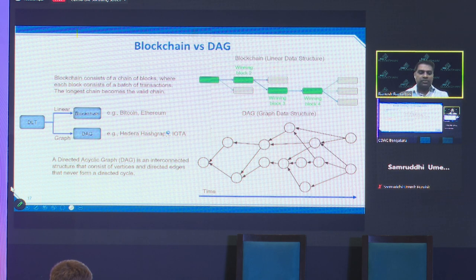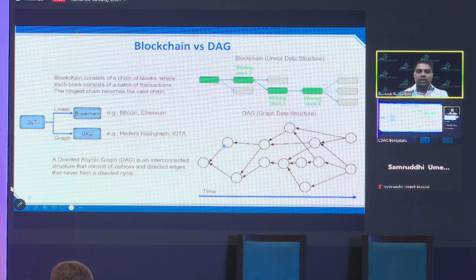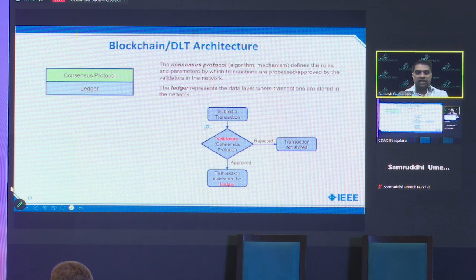There are different types of DLT data structures. Blockchain is a linear type of data structure, while DAG is an acyclic graph architecture. The rest of this presentation will primarily focus on blockchain.